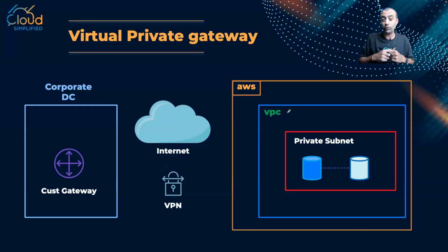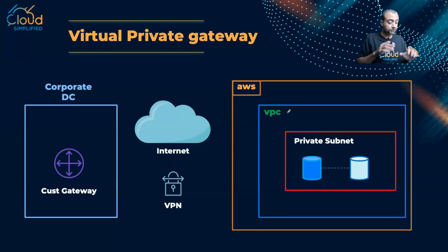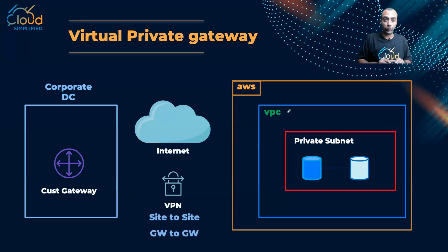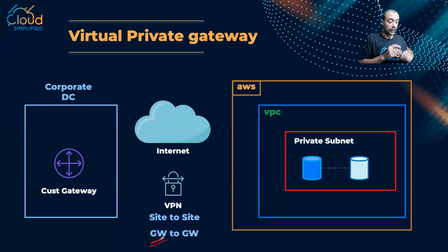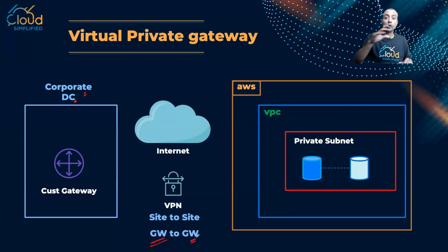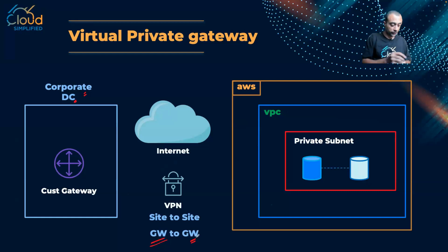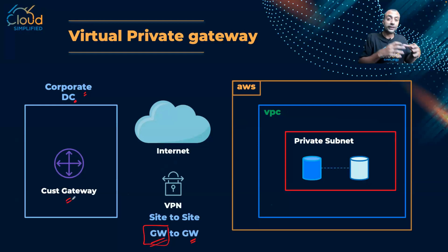If you come from a networking background, you may know there are multiple types of VPN. The type we talk about here is what we call a site-to-site VPN, or gateway-to-gateway VPN. This means I need one gateway from the corporate data center side and another gateway to terminate the VPN connection from the VPC side. The gateway on the corporate side can be the customer's physical router or physical firewall.